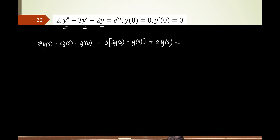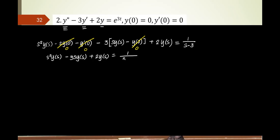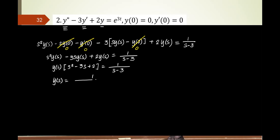The right-hand side is e to the 3t. The Laplace of e to the 3t is 1 over (s minus 3). Applying the initial conditions: y(0) is 0, so that whole term is 0; y prime becomes 0. Simplifying: s squared y(s) minus 3s y(s) plus 2 y(s) equals 1 over (s minus 3). Factoring out y(s): y(s) times (s squared minus 3s plus 2) equals 1 over (s minus 3). So y(s) equals 1 over [(s minus 1)(s minus 2)(s minus 3)].